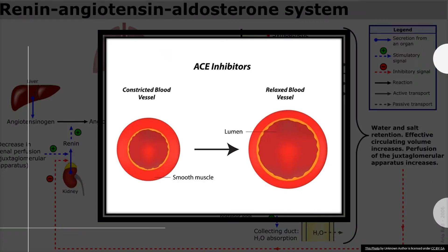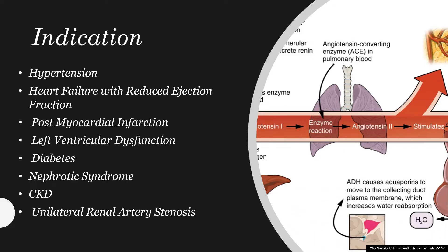The following diagram gives a granular description of the effects of ACE inhibitors on vasoconstriction. Indications for ACE inhibitors include: hypertension, heart failure with reduced ejection fraction, post-myocardial infarction, left ventricular dysfunction, diabetes, nephrotic syndrome, CKD, and unilateral renal artery stenosis.